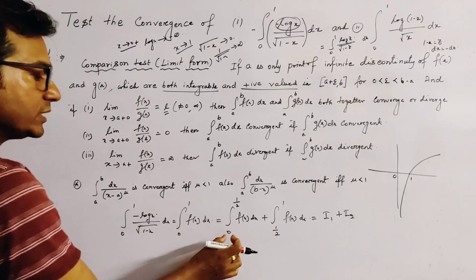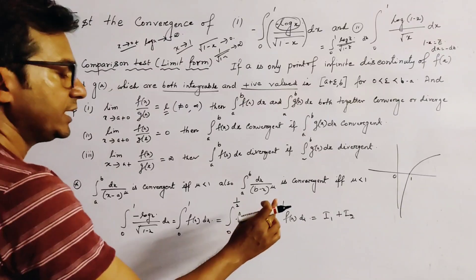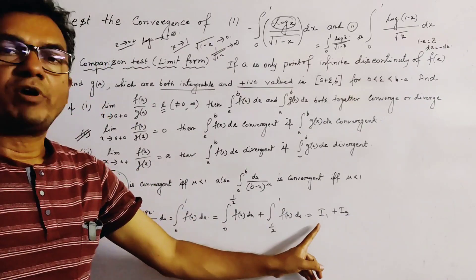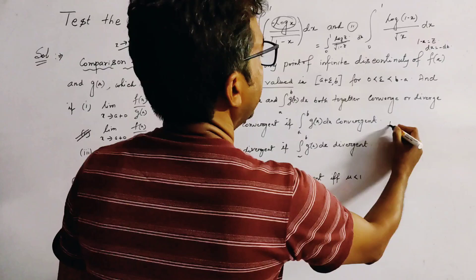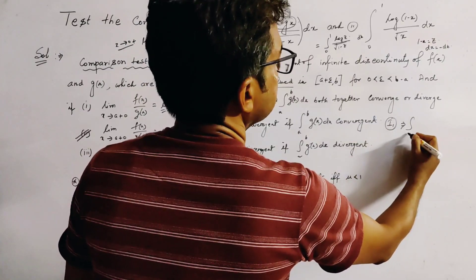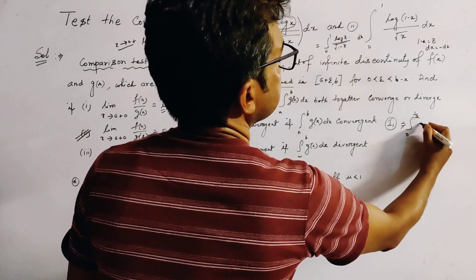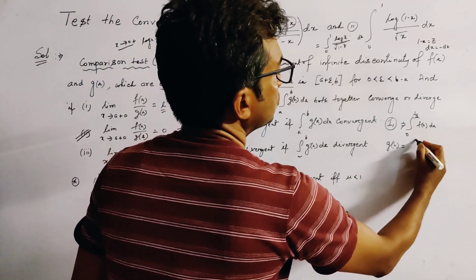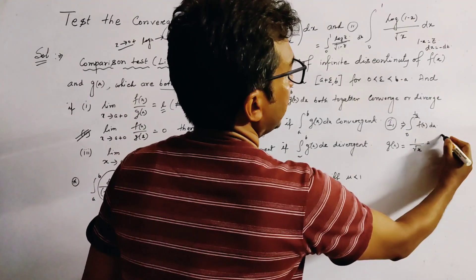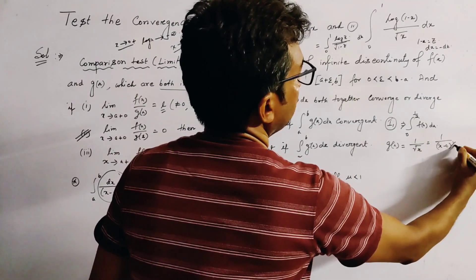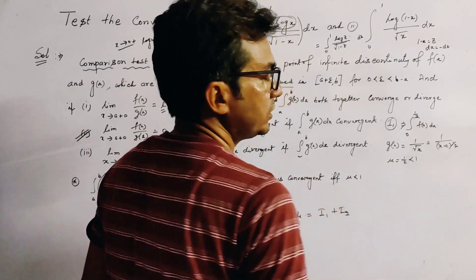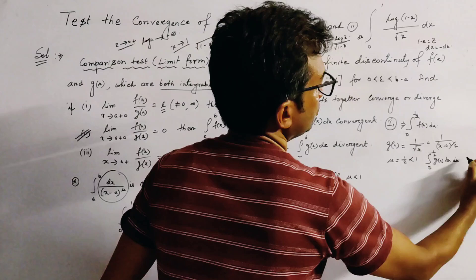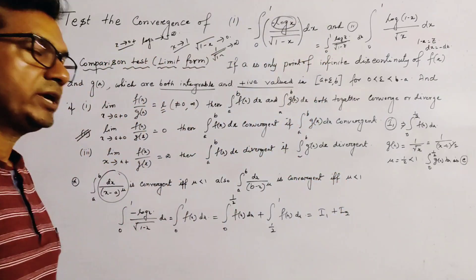We consider the case of I1: I1 equals integration 0 to 1/2 of f(x) dx. In this case, we take g(x) equal to 1 by root x, written as 1 by (x minus 0)^(1/2). Here μ equals 1/2, which is less than 1, so integration 0 to 1/2 of g(x) dx is obviously convergent.